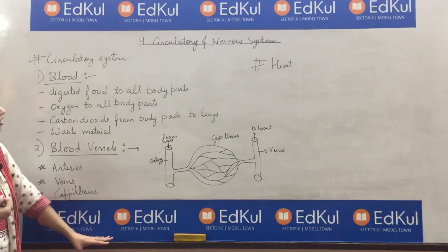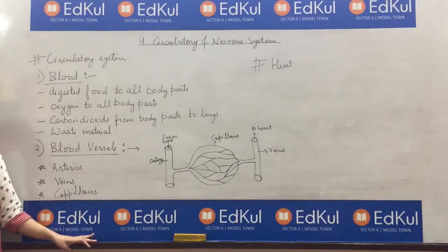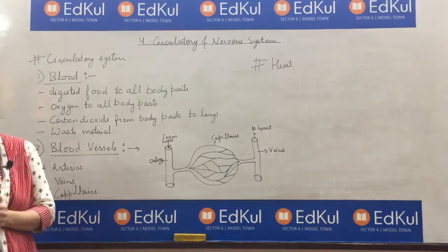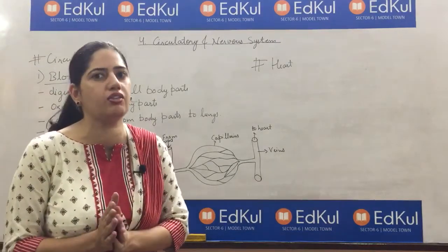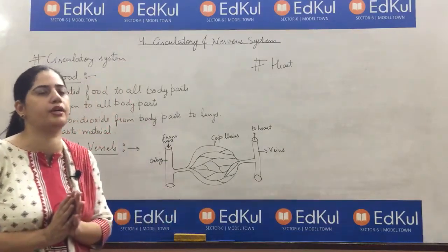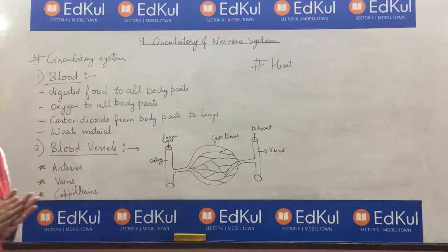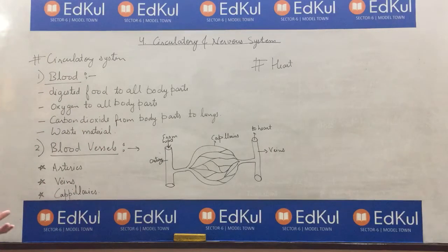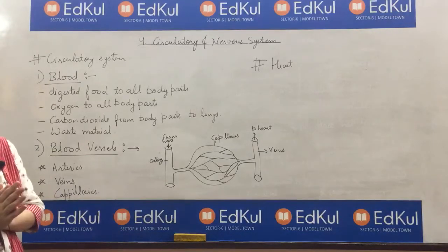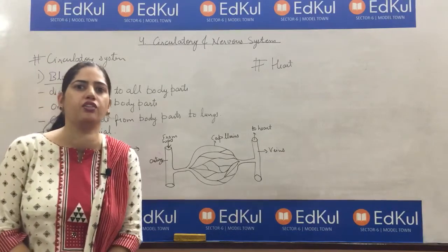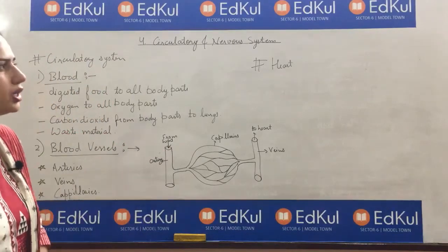First, we will discuss blood. Blood is the red colored fluid that is circulating inside our body. If we have a wound, what comes from there? Blood — and that is red in color. This blood helps in transportation of digested food throughout our body.